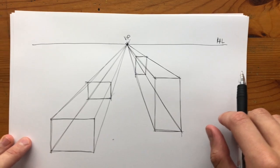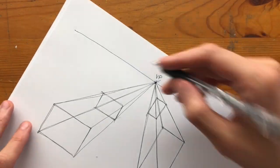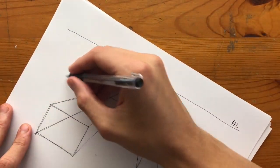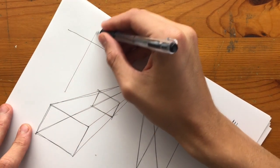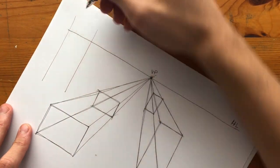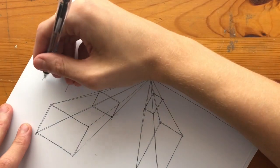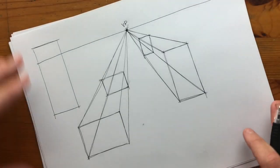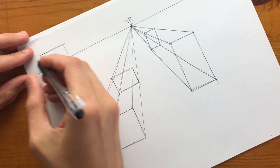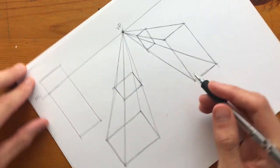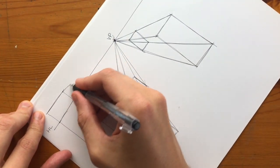If I were to draw another box, and I were to draw it above the horizon line, then anything above the horizon line has to converge down towards the vanishing point.